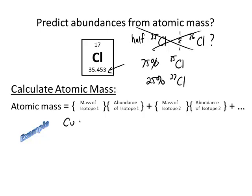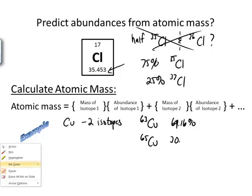Copper has two isotopes, and those two isotopes are copper 63 and copper 65. And it turns out that 69.16 percent of naturally occurring copper is copper 63 and 30.84 percent is copper 65.